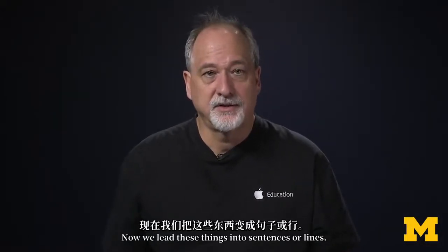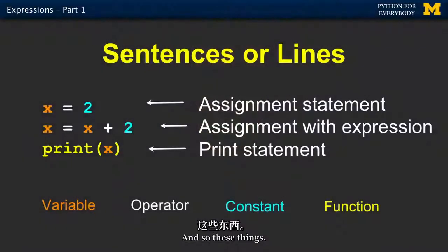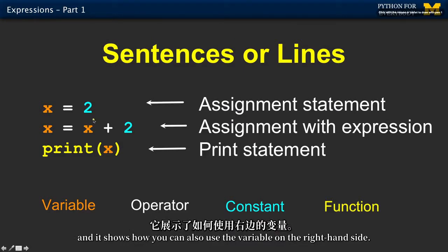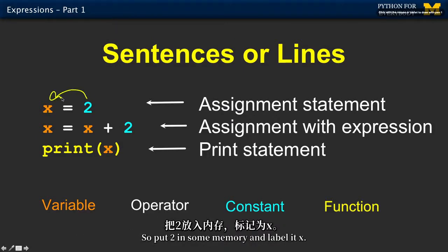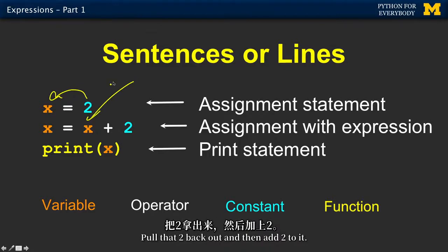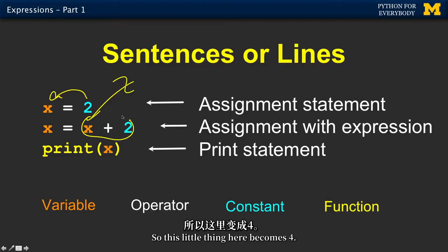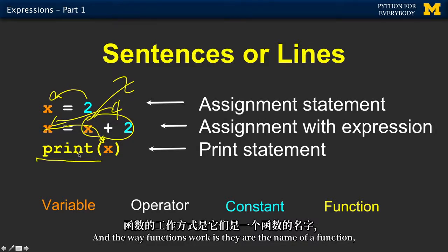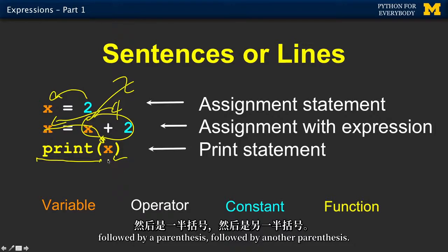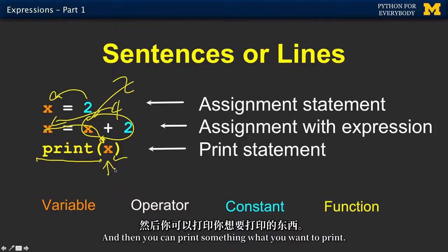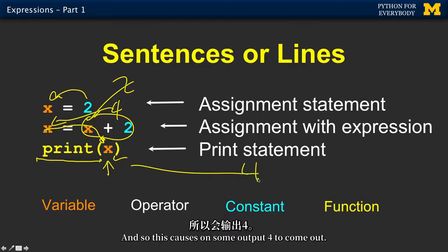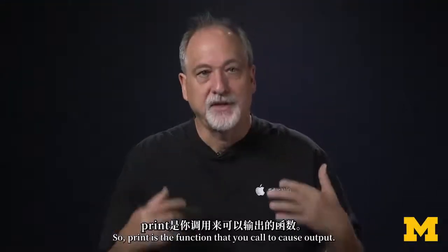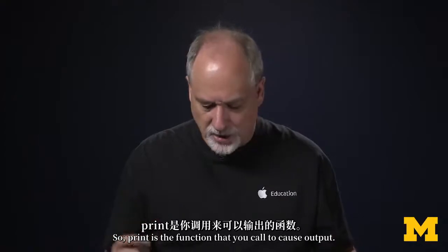Variables combine into sentences or lines of code. Here's a sequence: put 2 in memory and label it x, then pull that 2 back out and add 2 to it, so that becomes 4, and stick 4 into x. Then we have a print function — the name of a function followed by parentheses — and you put what you want to print inside. So print(x) causes 4 to come out. Print is the function you call to produce output.